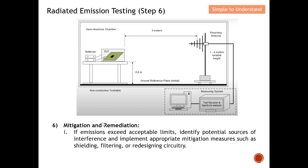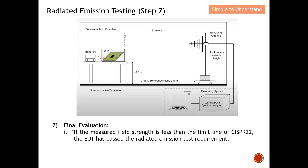Step 6: Mitigation and remediation. If emissions exceed acceptable limits, identify potential sources of interference and implement appropriate mitigation measures — such as shielding, filtering (low-pass or high-pass filters), or redesigning the PCB circuitry — in order to minimize the radiation.